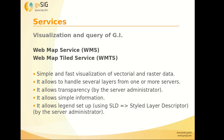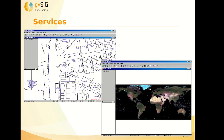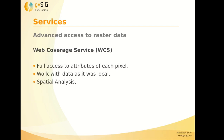We will see the differences in the next module in GBC directly. Here we can see two different services, for example for vector data and for raster data, but in GBC we will see them as an image. The advanced access to raster data service is the web coverage service, where we have full access to the attributes of each pixel. For example, we will be able to apply color tables, do spatial analysis, etc. We will work with this layer as if it was a local layer, such as a TIF or a JPG.